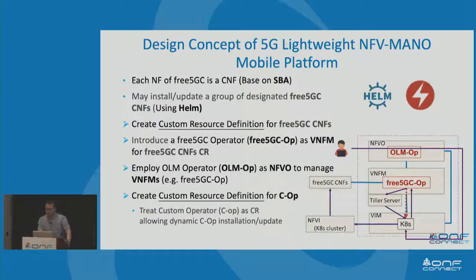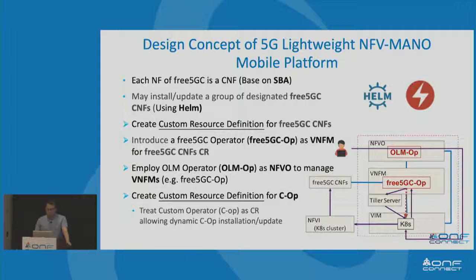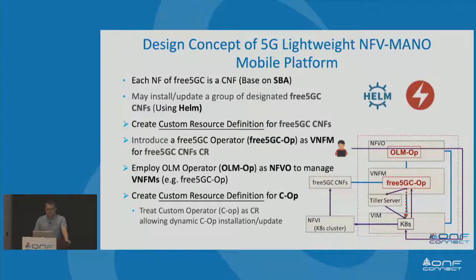How do we design a 5G lightweight NFV MANO mobile platform? First, each network function of free5GC should be a CNF based on 5G service-based architecture. Second, we use Helm to install and update a group of data-state-specific 5G core. For that, we need to create a custom resource definition for the 5GC CNF. We introduce a 5GC operator as the VNFM, and we employ OLM operator as the NFVO to manage VNFMs. We also create a CRD for custom operators such as the free5GC operator for more dynamic custom operator installation and updates.